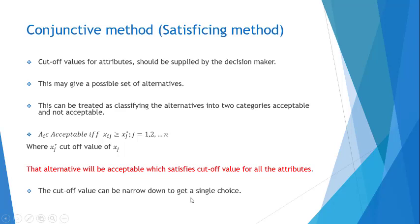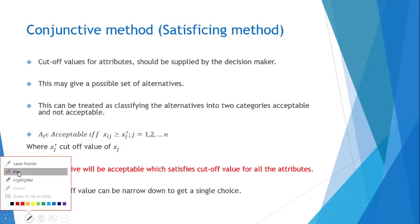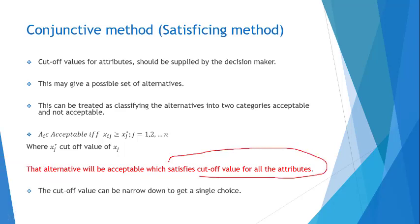This can be summarized as: we have to select that alternative which satisfies the cutoff value for all the attributes. Basically, we are trying to categorize those alternatives into two categories — one is acceptable and the other is non-acceptable — so this can be treated as a classification problem.